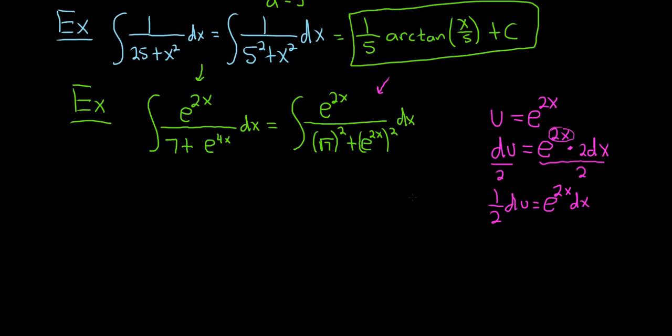And the reason I wrote it as 1 half du is because we're going to pull it out in the next step. Okay, now let's make the substitution. This is the hardest part for many people. So the e to the 2x dx, that's going to be 1 half du. So let's pull it out. So 1 half, integration sign, du. And we have a 1 up here, over the square root of 7 squared, plus u squared. Beautiful. Really, really just amazing.